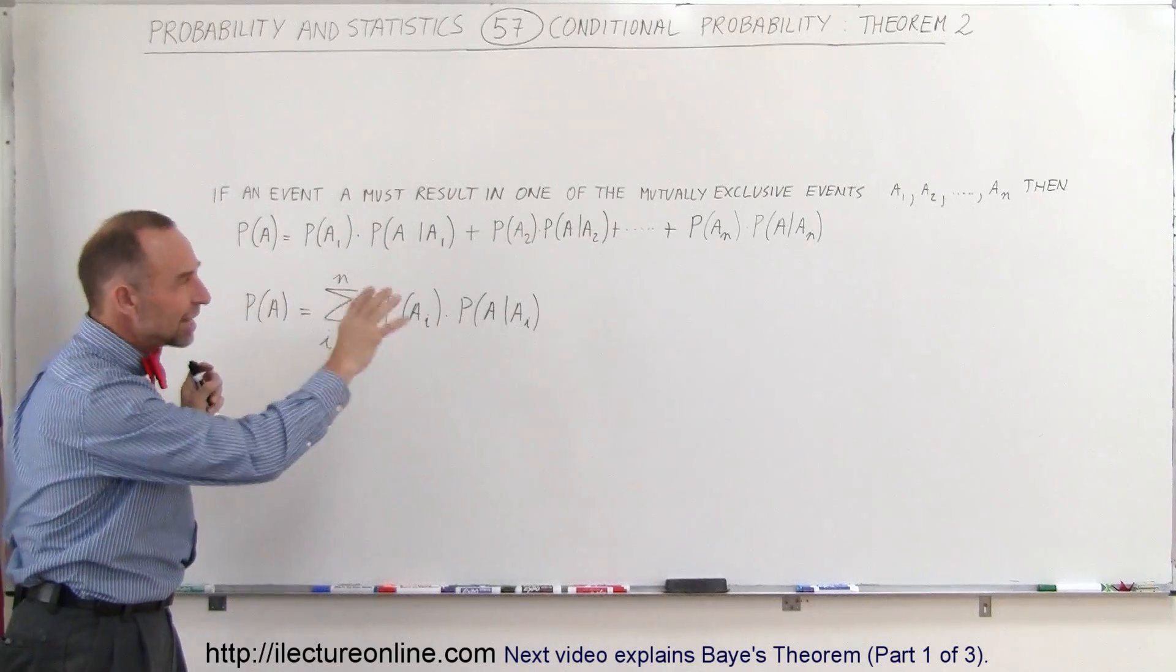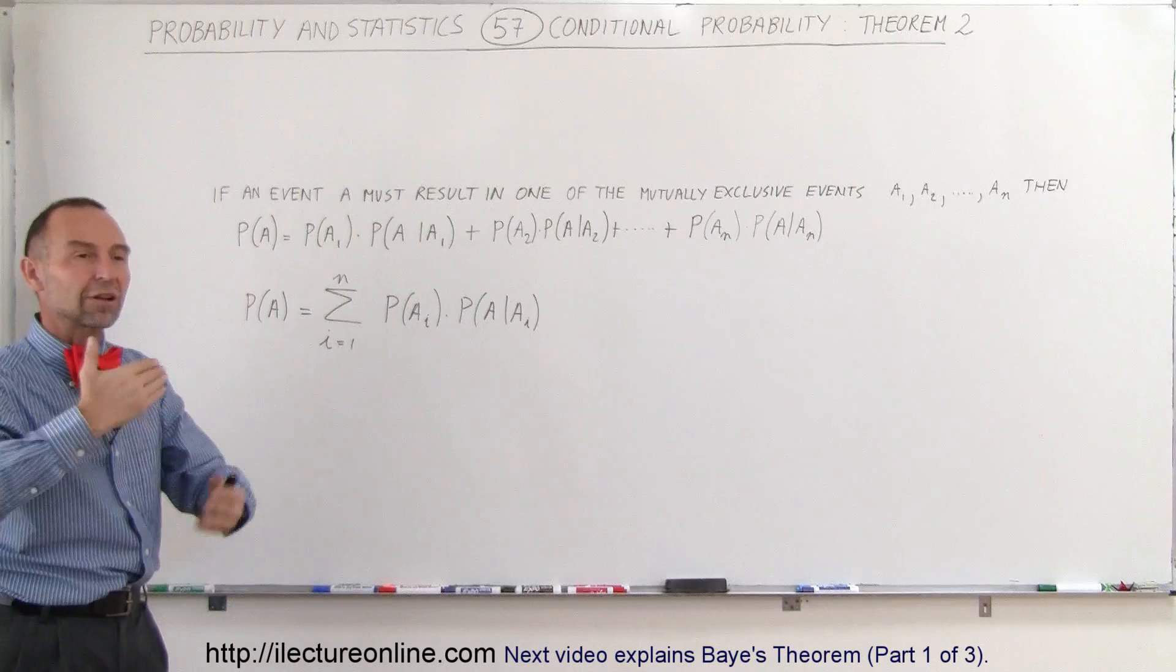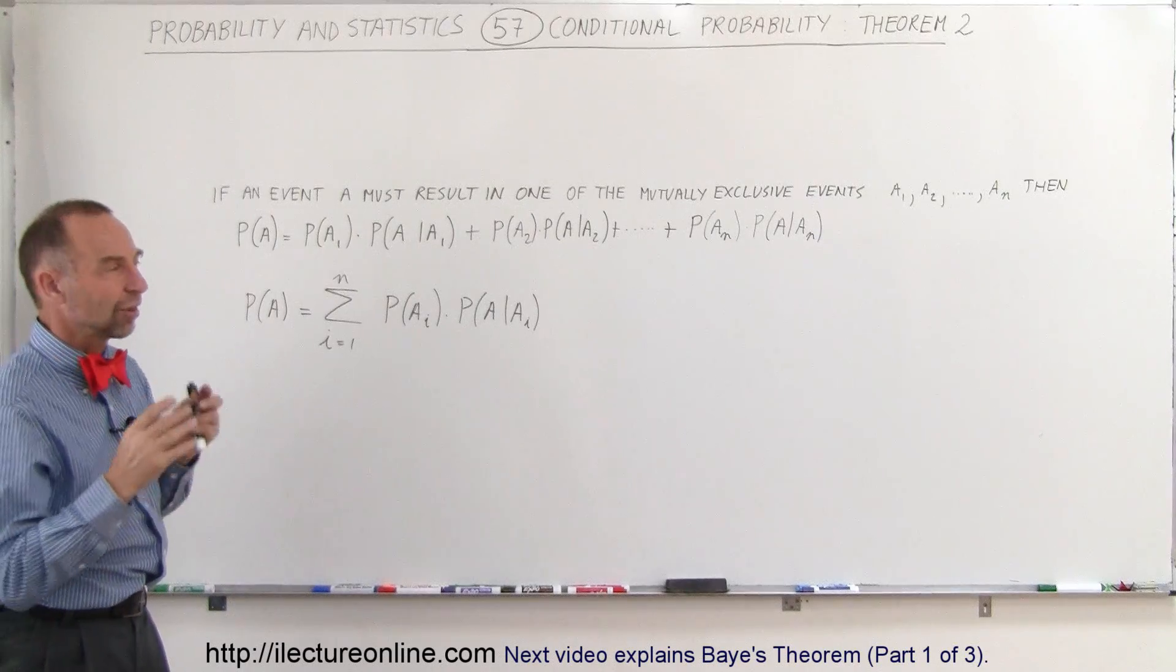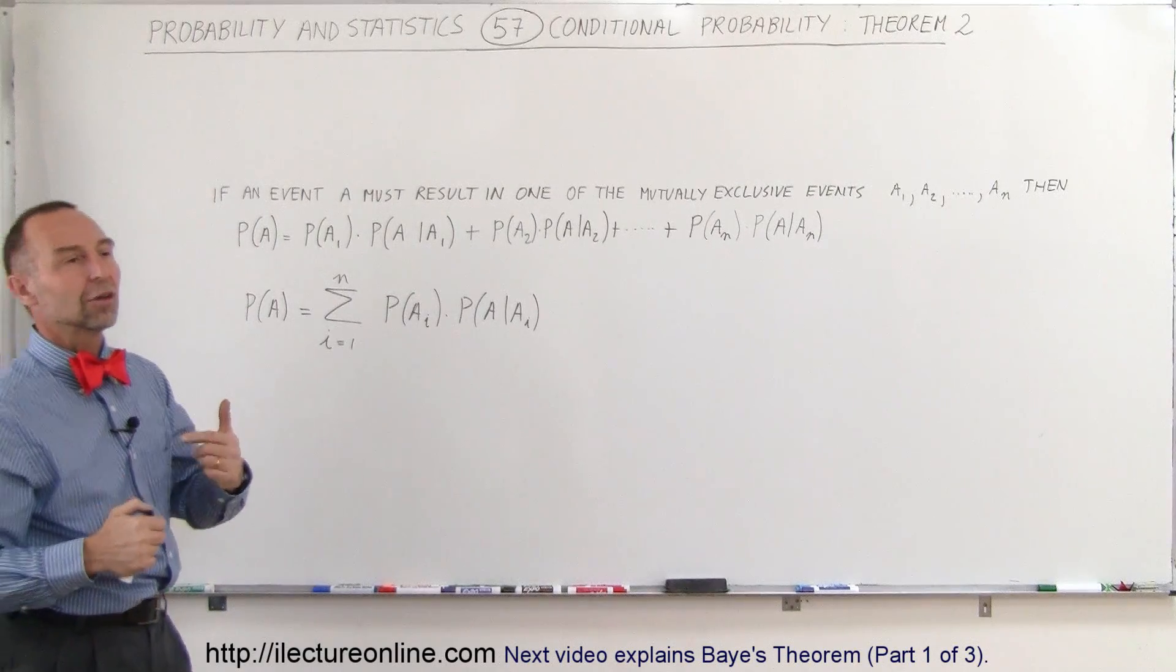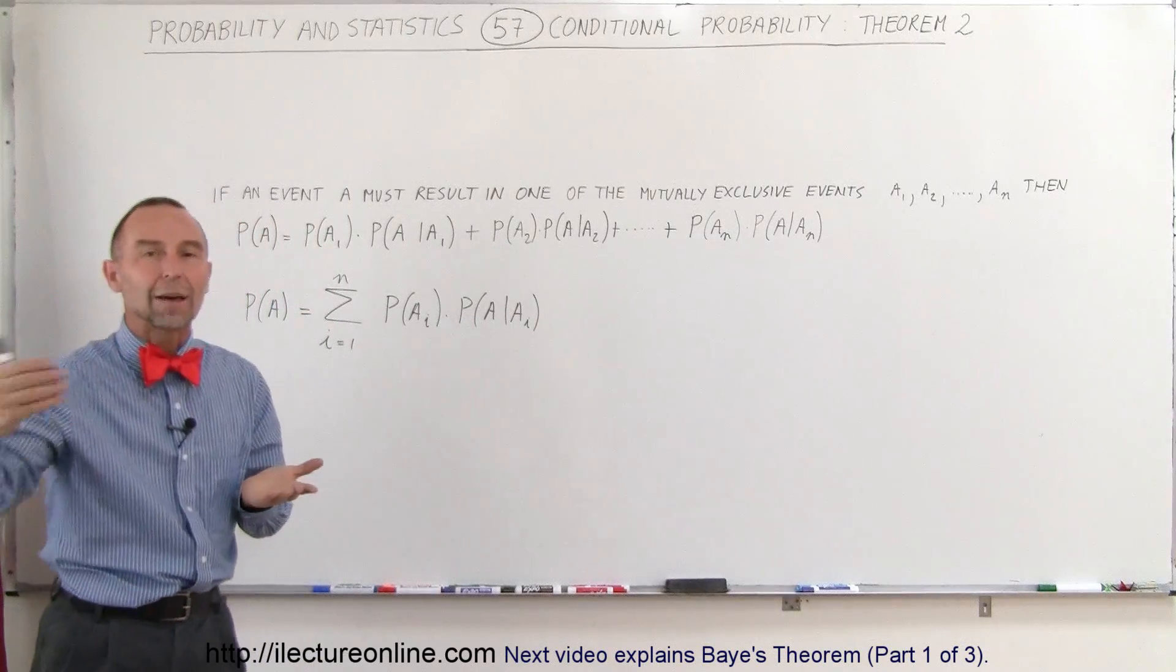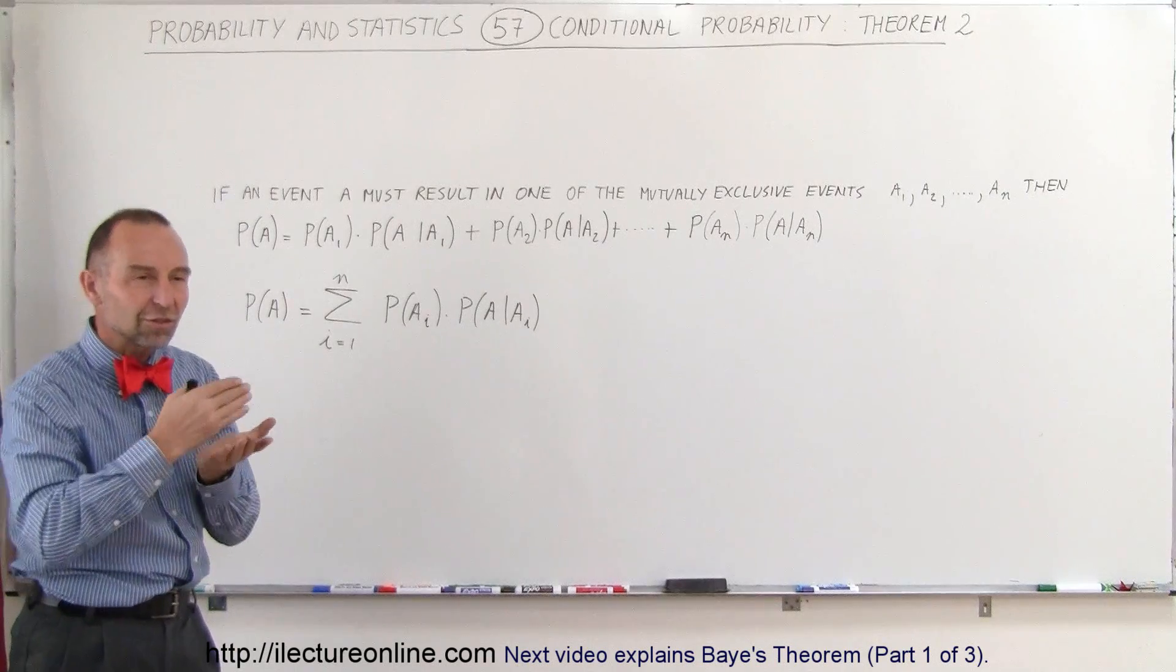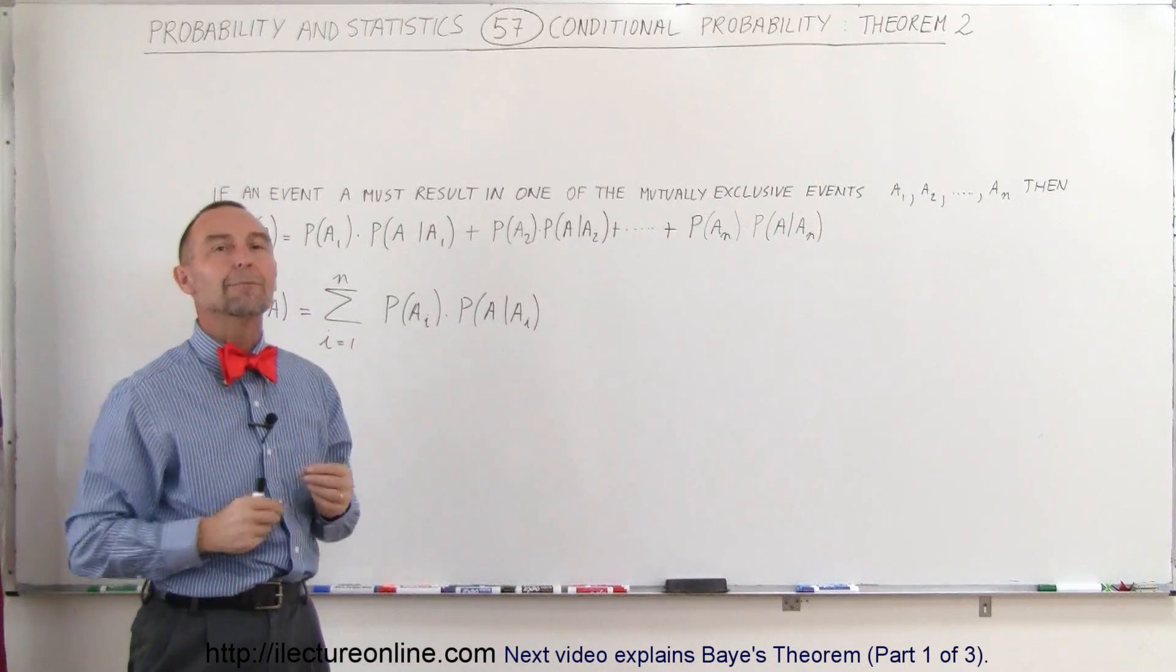And so now that we have an understanding kind of what that equation means now we're going to put that together and try to explain how Bayes' theorem works because that's ultimately how we can predict something that must have happened if something else happened before. So stay tuned if you're still interested in this and we'll show you a systematic approach of how to explain Bayes' theorem.